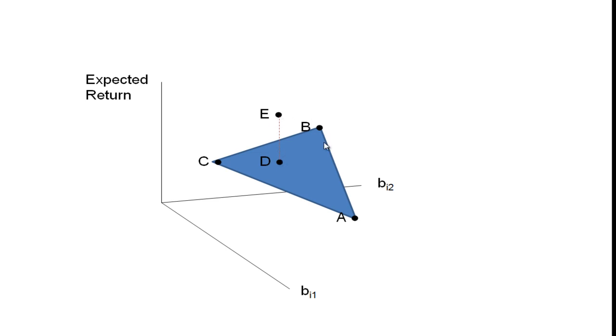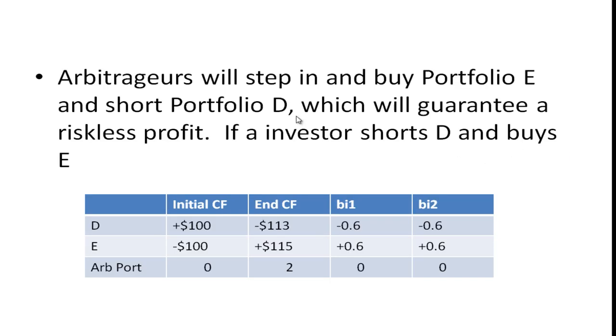What's going to happen is that arbitrageurs are going to buy portfolio E—for the level of risk they take, they get a higher expected return than D—and they're going to short D. And what this is going to do is guarantee a riskless profit. Not only is it going to guarantee a riskless profit, it's going to guarantee a riskless profit that doesn't cost anything. You can earn the risk-free rate by buying a Treasury bill, for example, but you actually have to put your own money up.